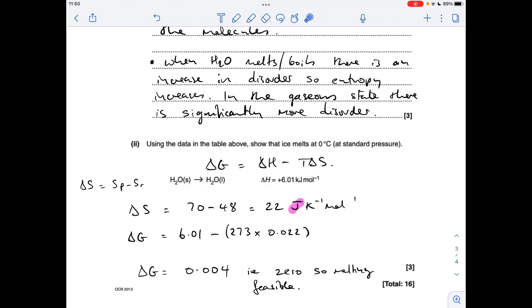So feeding the numbers into the Gibbs equation we've got the ΔH minus the temperature, which has to be in Kelvin. And what I've done here is divided the entropy change by 1000 so it's in kilojoules per Kelvin per mole, so it matches the kilojoules per mole there. Anyway, ΔG comes out at that which is effectively zero. And that's why melting is feasible at zero degrees C.